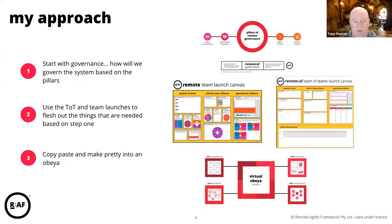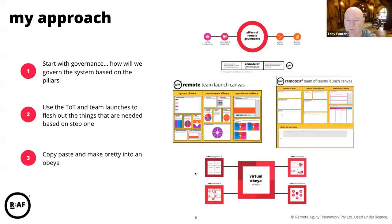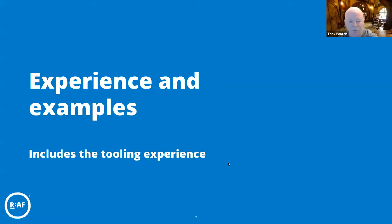One of the approaches we use is the team of teams launch to flesh out the things needed based on step one, because when we're launching it you have to start at that layer before you can get to the enterprise line. Then in Dave's favorite words, you copy and paste and make it into a prettier bear. That's a whistle-stop move around how we do it. Now we'll get into a bit more depth as we talk about some of the experiences and examples - I'll defer to my good friend Dave.